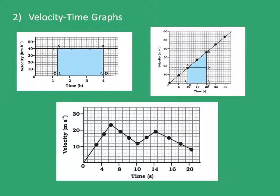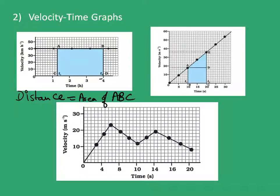The second information you can find out is the displacement or the distance traveled during a time interval, say t1 to t2. To find the distance traveled, we calculate the area enclosed within the time interval t1 and t2 — that area equals the distance traveled. In the first example, the distance traveled is the area of ABCD, the blue shaded region.